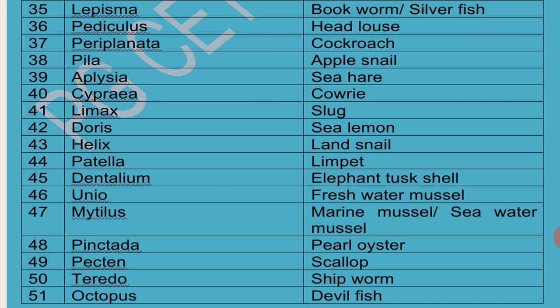Pediculus is commonly called Head Louse. Periplaneta Americana is the scientific name of Cockroach. Pila Globosa is the scientific name of Apple Snail. Aplysia is commonly called Sea Hare. Cypraea is commonly called Cowrie.